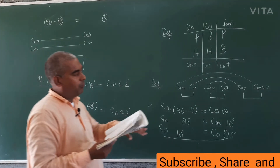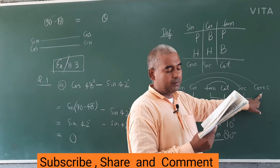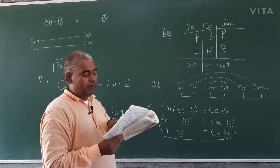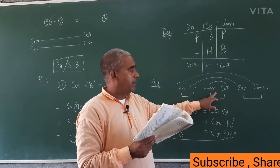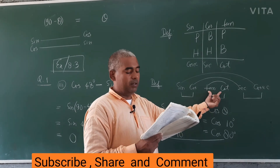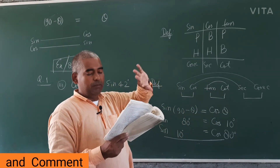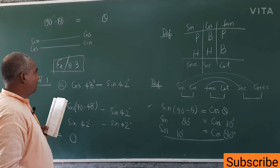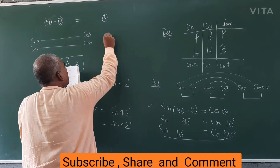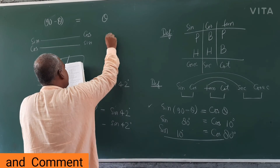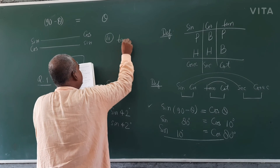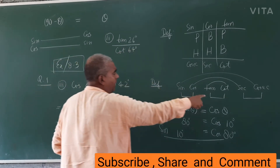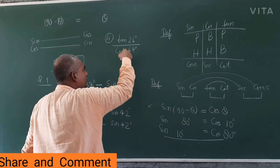Part four: sec and cosec — both are complementary, neighboring, and equal in value, so the answer is zero. For part two: tan 26° upon cot 64°. Tan and cot are neighboring, so both are equal, and since we are dividing equal values, the answer will be 1.